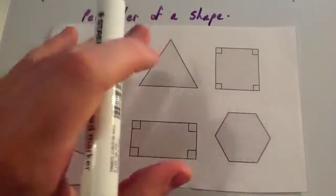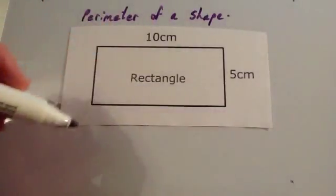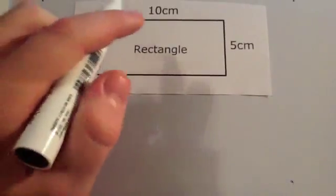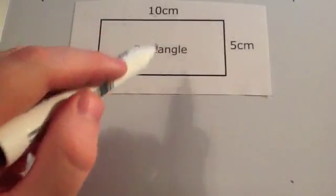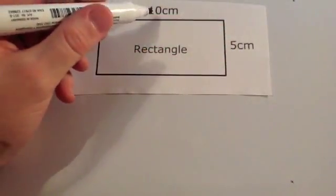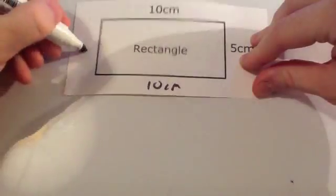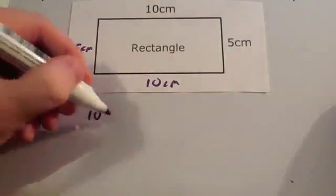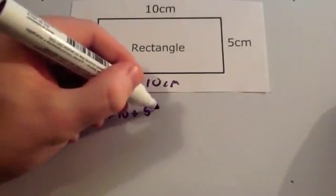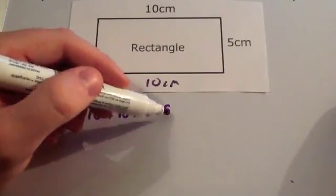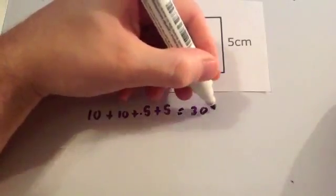So the perimeter of a shape is the distance around the outside of a shape. Here we've got a rectangle and we're going to find the perimeter of this rectangle. We need to add up all four sides — the top, the bottom, the side and the other side. Because the top is ten centimetres, the bottom is also ten centimetres. Because the right-hand side is five centimetres, the left-hand side is also five centimetres. So we're going to do ten plus ten plus five plus five. Ten plus ten is twenty, plus five is twenty-five, plus five is thirty.